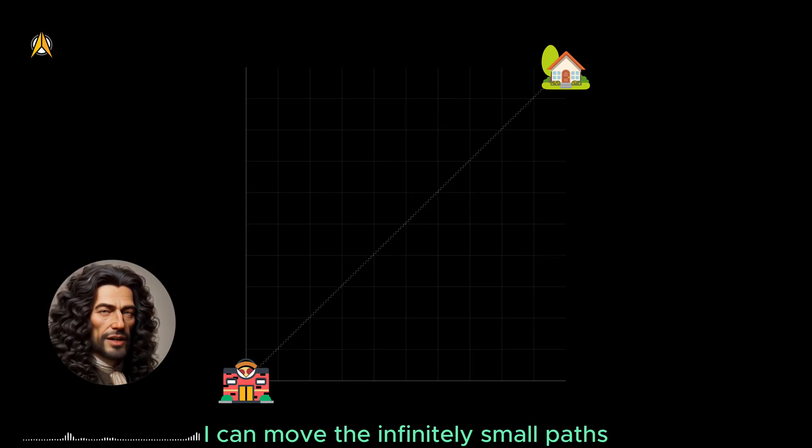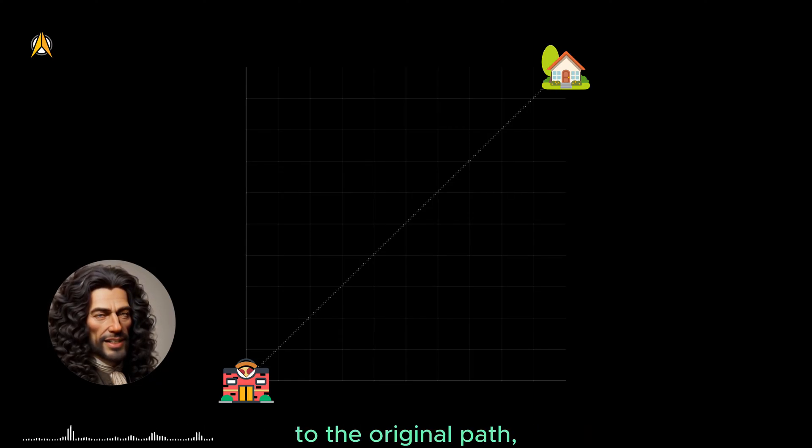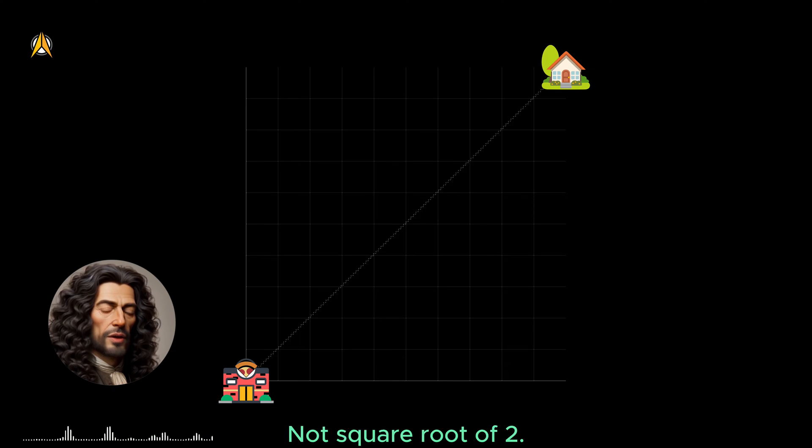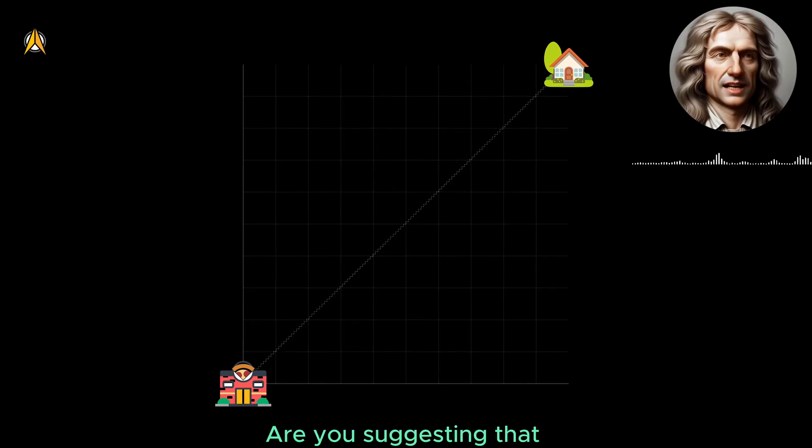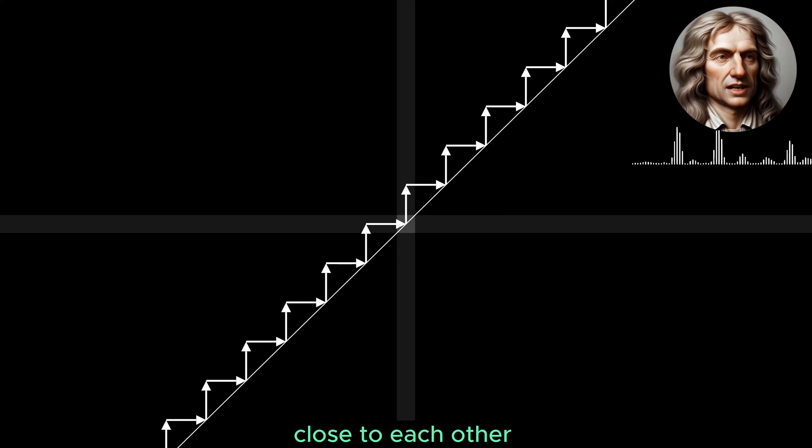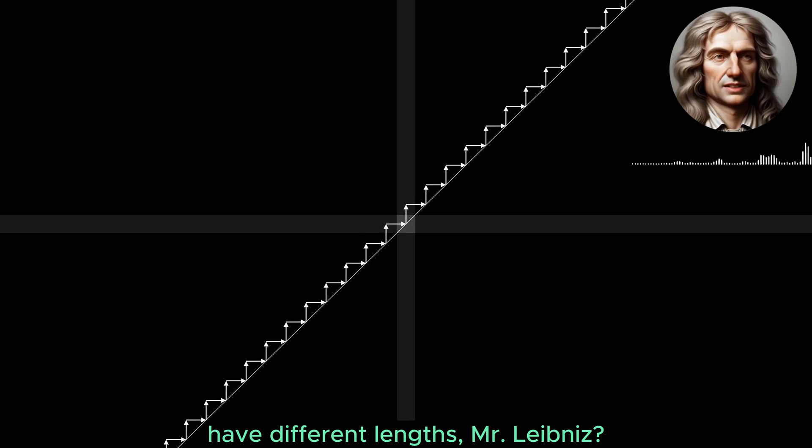Mr. Newton, I can move the infinitely small paths to the original path and the complete length is 2, not square root of 2. Are you suggesting that two paths that are infinitely close to each other have different lengths, Mr. Leibniz?